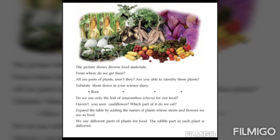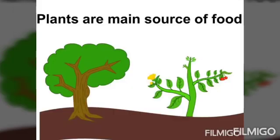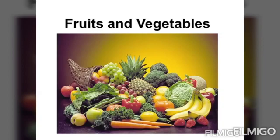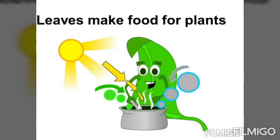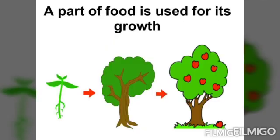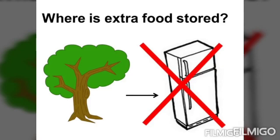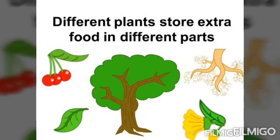We use different parts of plants for food. The edible part in each plant is different. Plants are the main source of food — they give us fruits and vegetables. Leaves make food for plants and a part of that food is used for their growth. But where is the extra food stored?